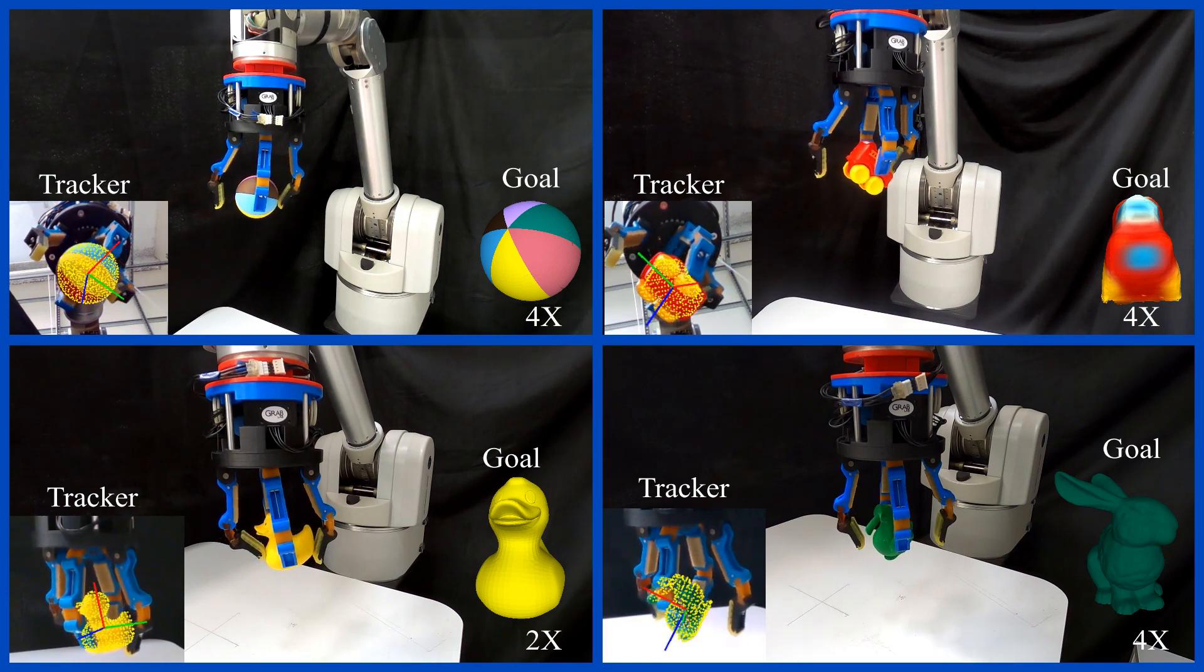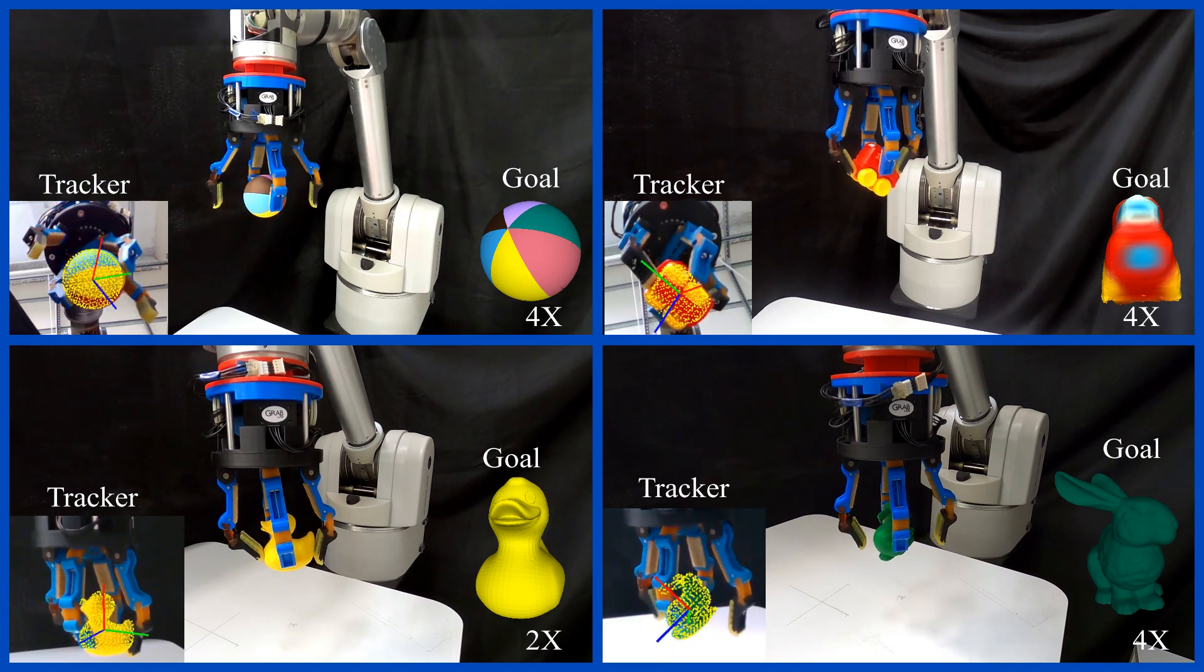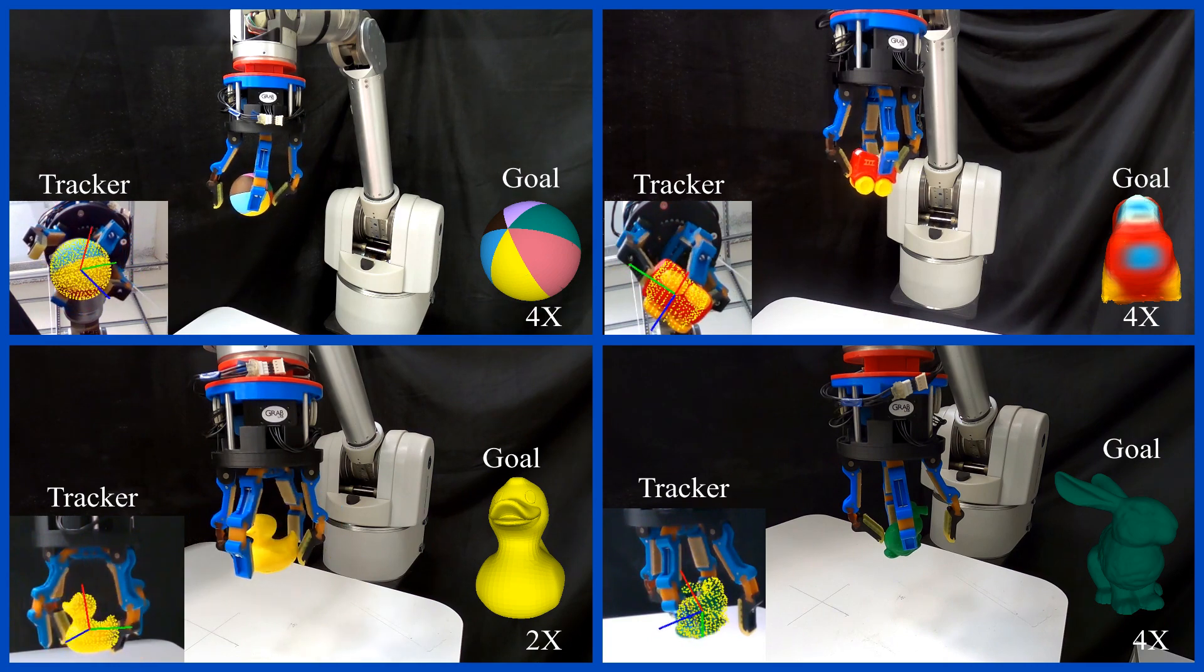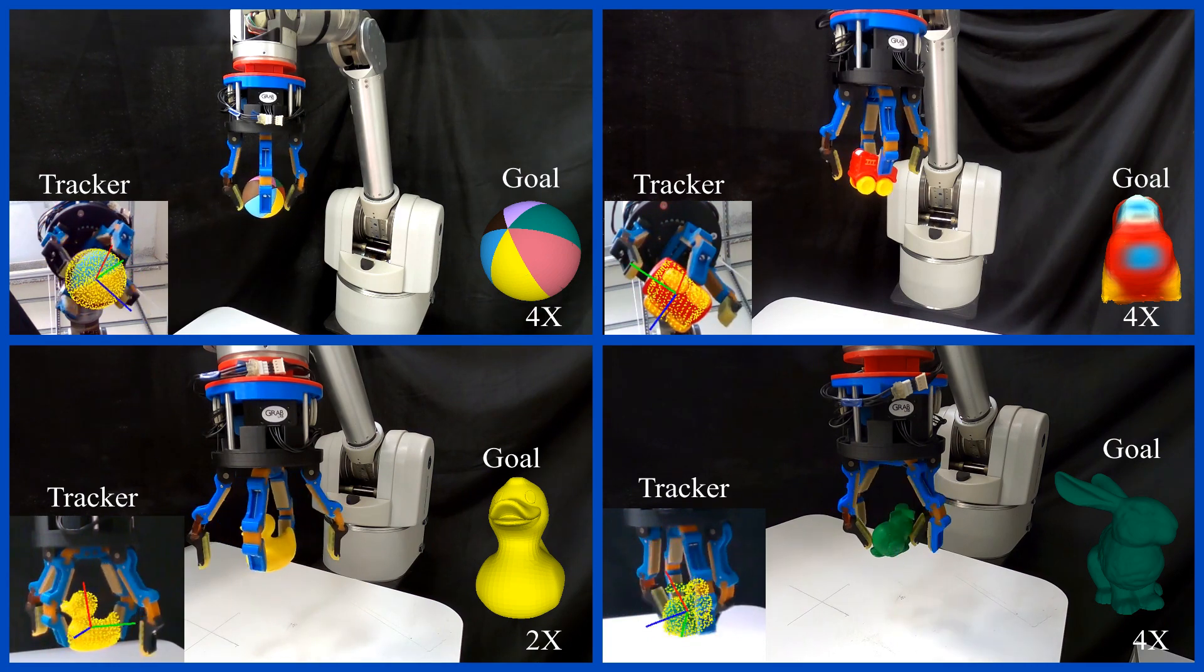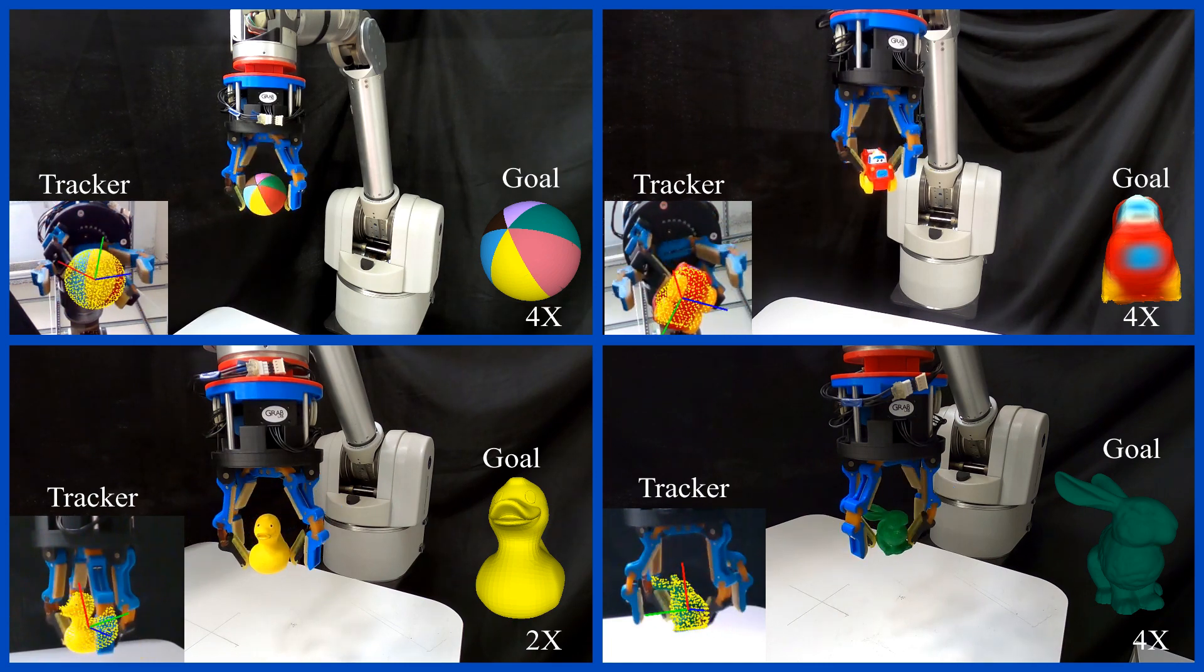Notably, the bunny and the duck were the most difficult to manipulate due to their non-convex geometries, and the sphere required a significant amount of manipulation in order to precisely reach the goal configuration. Note that the model used to train the object tracker for the toy car was 3D scanned, while the others are proper CAD meshes.